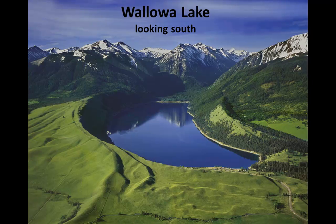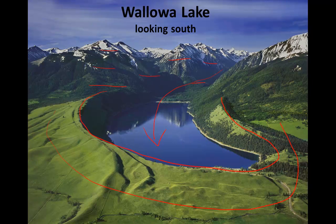This photo shows Wallowa Lake, which is in northeast Oregon near the town of Joseph. Wallowa Lake was formed when an Ice Age glacier advanced out of the Wallowa Mountains into the larger Joseph Valley, forming a series of moraines that now dam Wallowa Lake. Notice in the photo that we have steep mountain slopes to the south, the broader flatter Wallowa Valley in the foreground, and the moraines that encircle Wallowa Lake which are relatively steep but not as steep as the mountain slopes behind them.